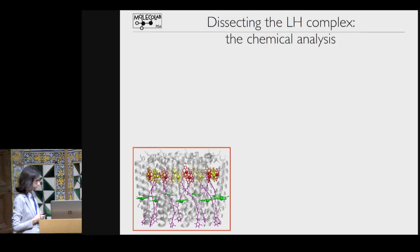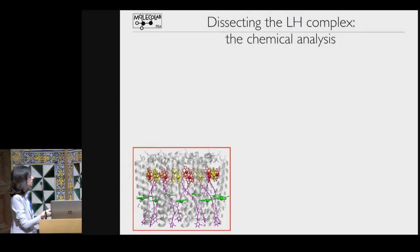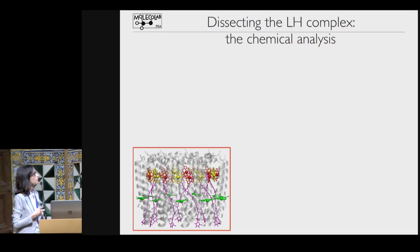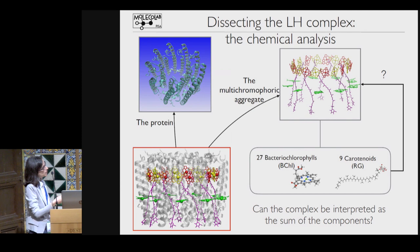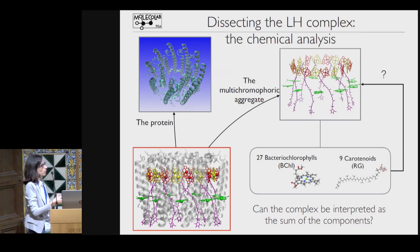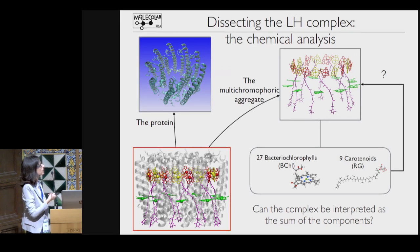As a theoretical and computational chemist, what I want to do is to reconstruct the properties of this system by starting from the components—the protein and the pigments. In terms of pigments, there are 27 bacteriochlorophylls and 9 carotenoids. The question is: can the complex be interpreted and reproduced by the sum of the components?